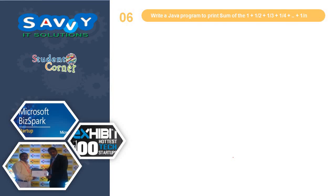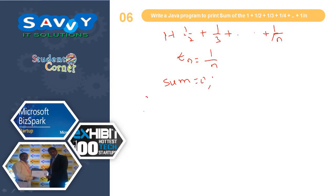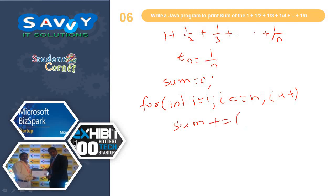One more program — the last one: write a Java program to print the sum of 1 plus 1/2 plus 1/3 plus so on plus 1/N. The general form of t(n) equals 1 by N. Now sum equals 0, for int i equals 1 to i less than or equal to N, i plus plus, sum plus equals 1 by N. Then we print sum and obviously we will get the results.